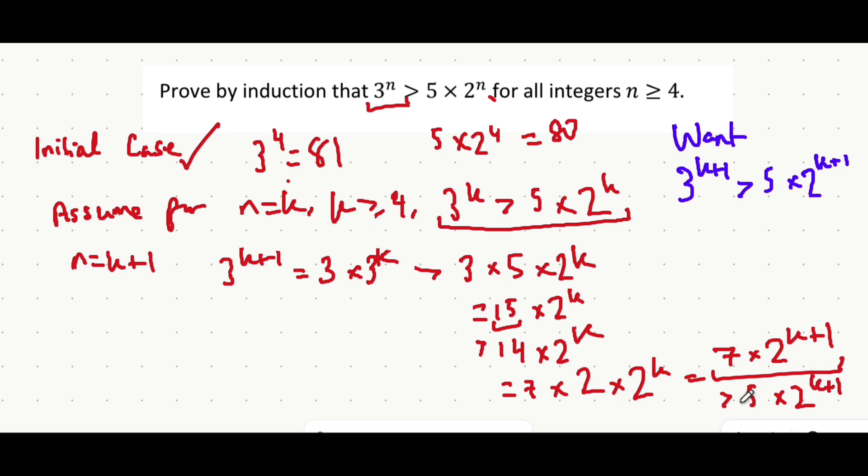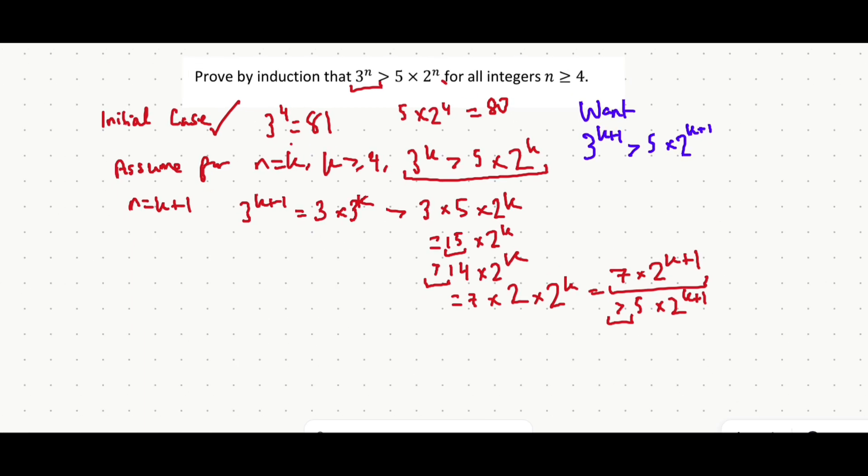After that we've pretty much proved the statement. So it's a lot of inequalities and sort of like pulling at straws here, pulling numbers out of nowhere. But after that you can make your last statement. You can say hence by proof of induction the whole statement is true: 3 to the power of n is greater than 5 times 2 to the power of n for all integers n is greater than or equal to 4.